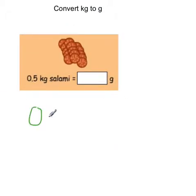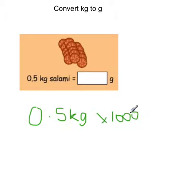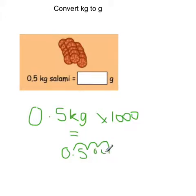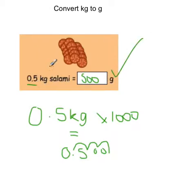We've got 0.5 kilograms of salami. We're going to multiply by 1,000 — moving the numbers forward 1, 2, 3 spaces — which gives us 500 grams. We also know 0.5 kilograms is half a kilogram, and half of 1,000 grams is 500 grams. So they're both halves, and therefore that answer is correct.